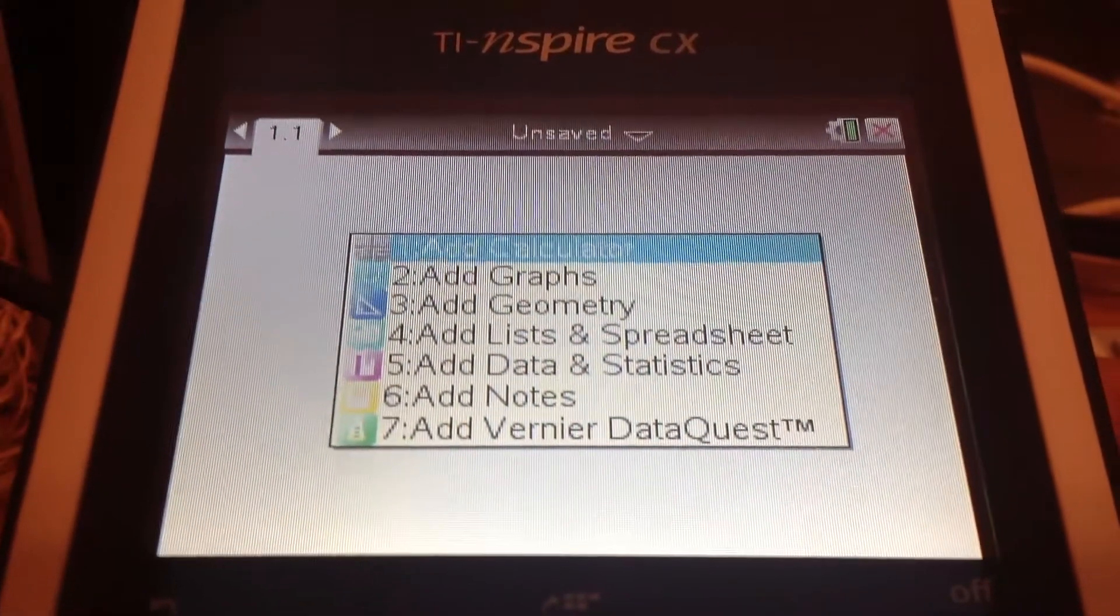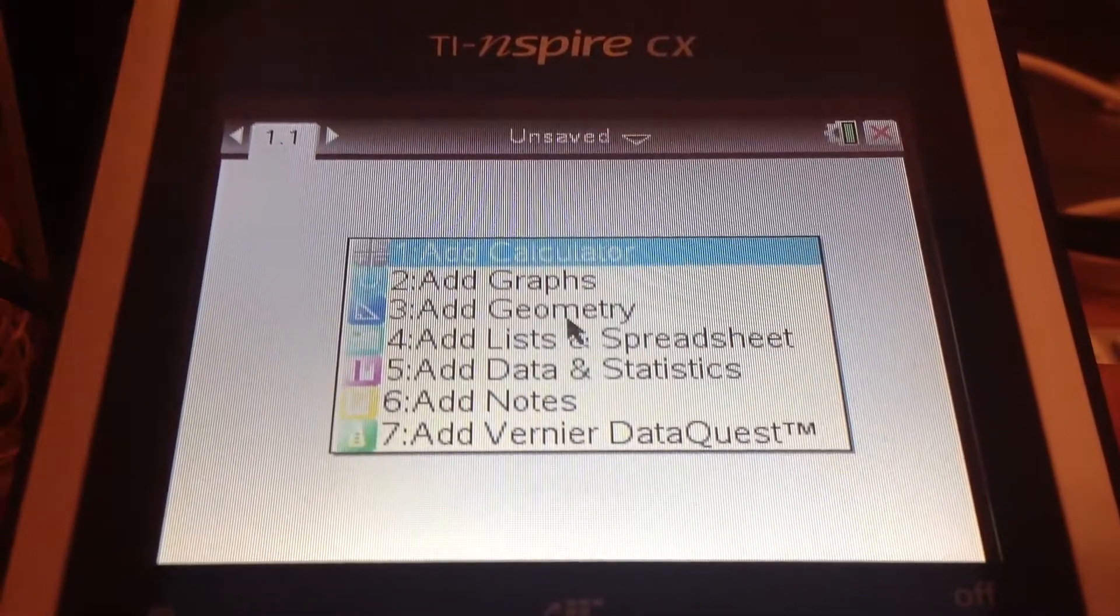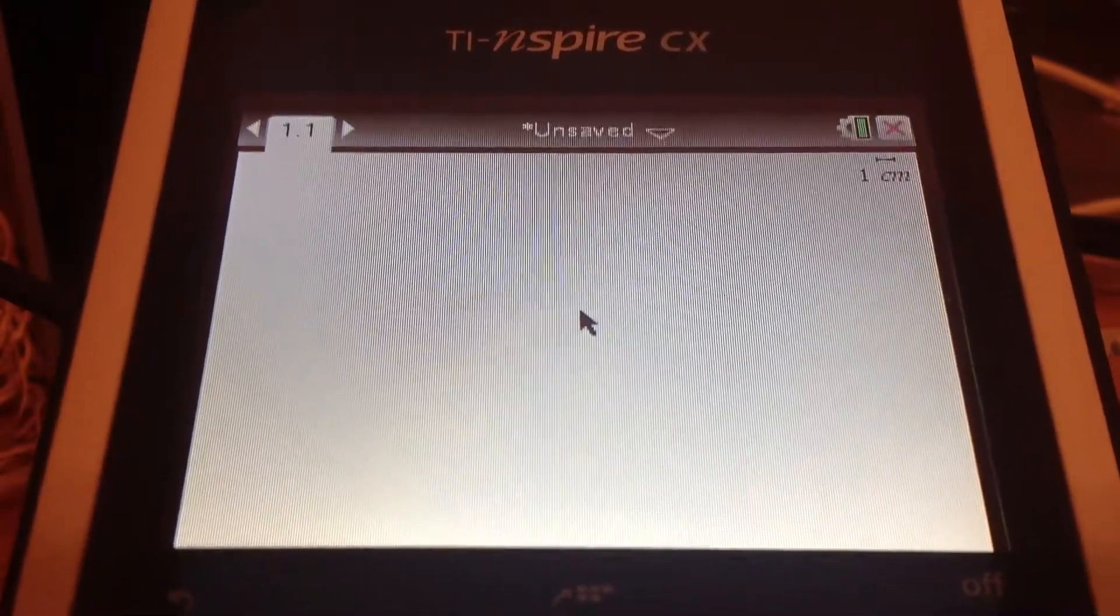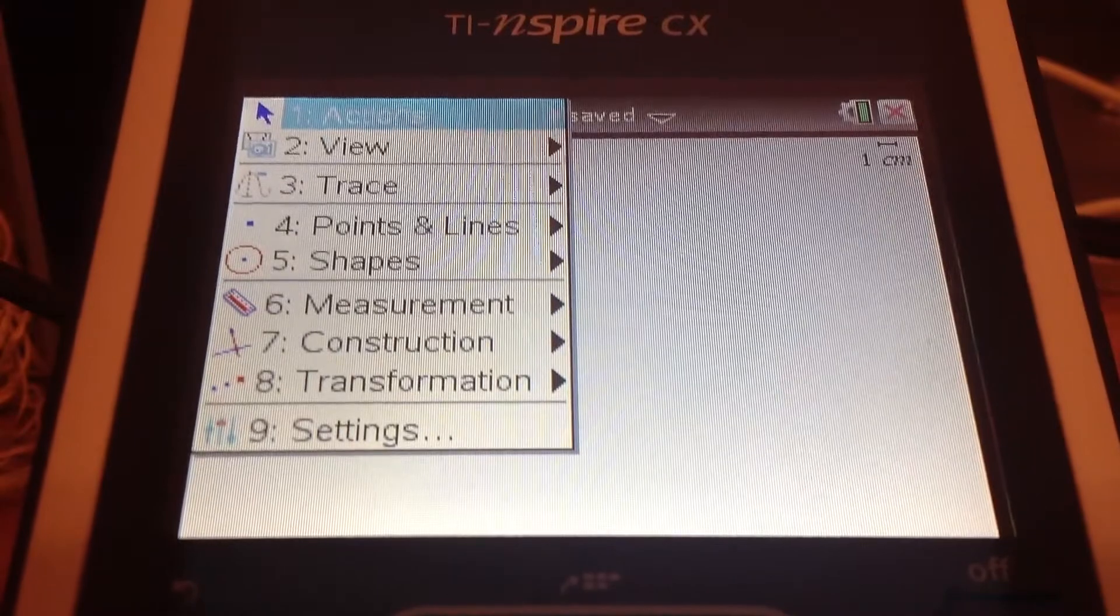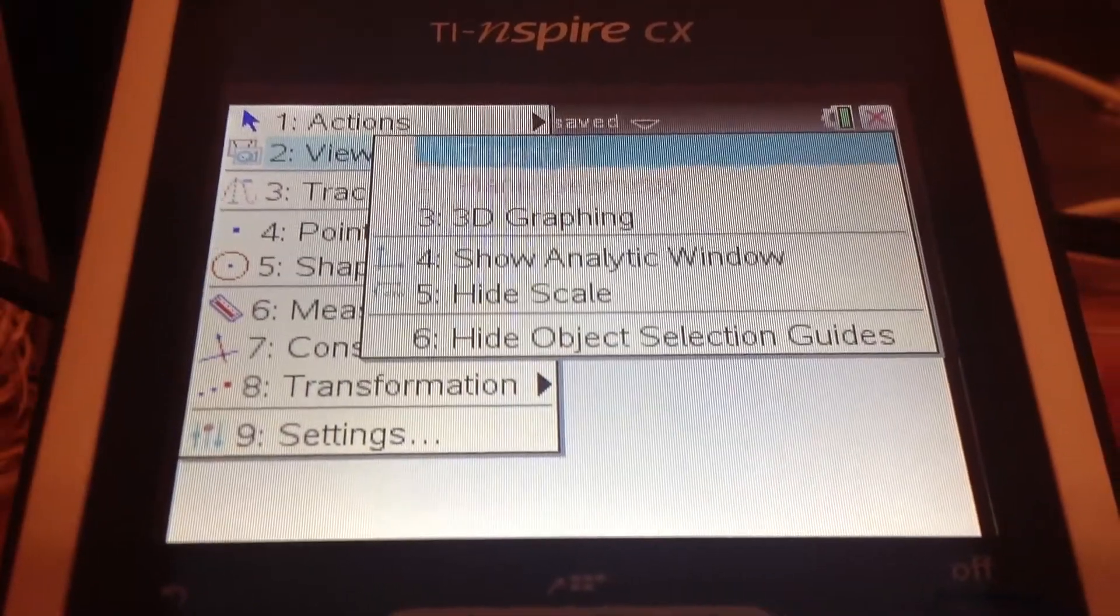Step 2, add geometry. Now step 3, hit menu, then go to view, then turn on 3D graphing.